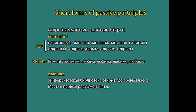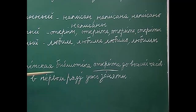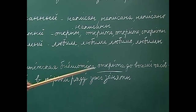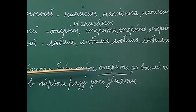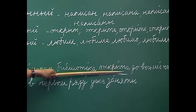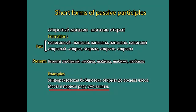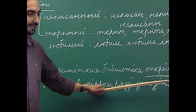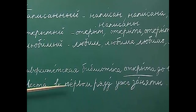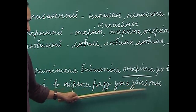Let us discuss some examples. The first example is: 'Universitetskaya biblioteka otkryta do vos'mi chasov' — The university library is open till 8 o'clock. After 'do' we use the genitive case, so 'vos'mi' from 'vosem'' (8). Since 'biblioteka' is a feminine gender noun, we use the feminine short form of the participle: 'otkryta'. The next example is: 'Mesta v pervom ryadu uzhe zanyaty' — The seats in the first row are already taken. Since 'mesta' is plural, we use the plural form of the past passive participle: 'zanyaty'.